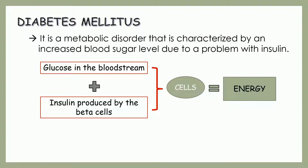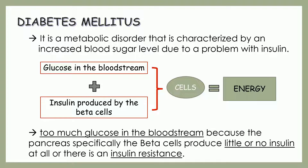Basically, what is happening to a patient with DM is that there is too much glucose in the bloodstream because the pancreas produces little or no insulin at all, or there is insulin resistance.